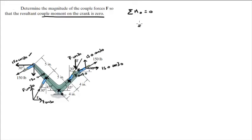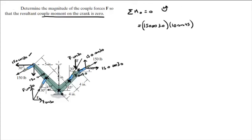The moment created by this force at O is 150 cosine of 30, times the lever arm — this distance right here — which is 10 inches times sine of 45, where 45 is this angle right here. Assuming counterclockwise is positive, that creates a counterclockwise moment. The moment created by this next force is also positive because it's counterclockwise: it's 150 sine of 30 times 10 cosine of 45, which is this lever arm right here.